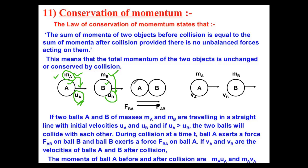There is one condition: the velocity of body A must be greater than the velocity of body B. Why? Because we need a collision to take place between the two bodies, and for that there must be an exchange of forces and energies between A and B.